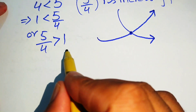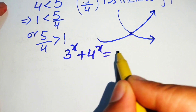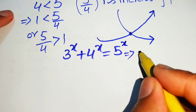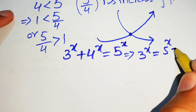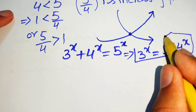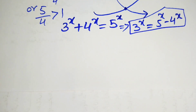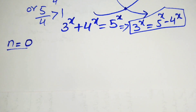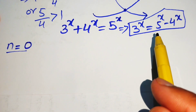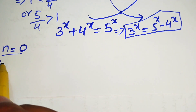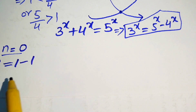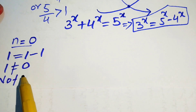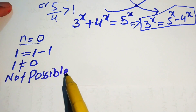Our equation is 3^x + 4^x = 5^x. First we check at x equals 0: substituting gives 3^0 + 4^0 = 5^0, which is 1 + 1 = 1, or 2 = 1. But we know 2 is not equal to 1, so x = 0 is not possible and we reject this value.